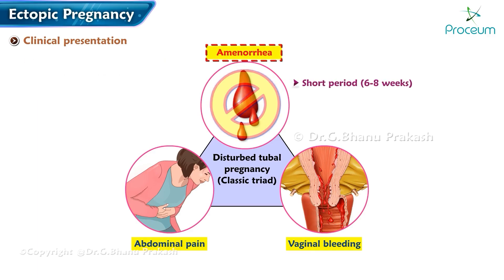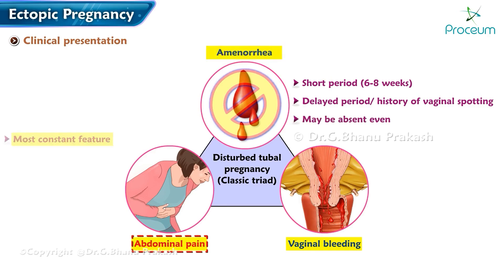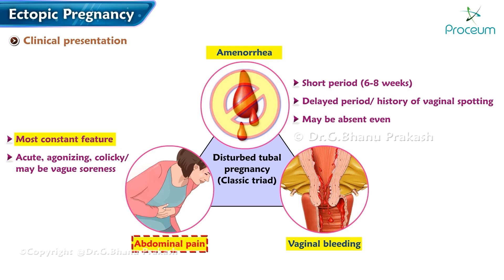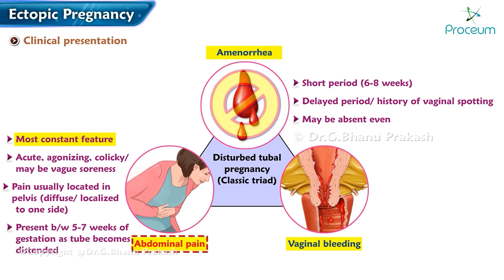Amenorrhea: a short period of six to eight weeks usually; there may be a delayed period or history of vaginal spotting; amenorrhea may even be absent. Abdominal pain is the most constant feature — acute, agonizing, or colicky — located in the pelvis, diffuse or localized to one side. Pain tends to present between five and seven weeks of gestation. Vaginal bleeding may be slight and continuous.